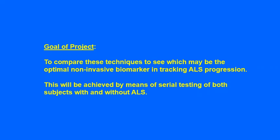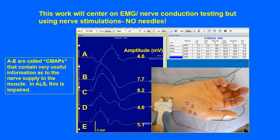This will be achieved by means of serial testing both in control or normal subjects as well as subjects with ALS. To give you a quick overview, I need to tell you about some of the things we measure. Many of you are already familiar with a procedure called an EMG for the diagnosis of ALS, which is one of our more important tests to determine whether or not the disease is present.